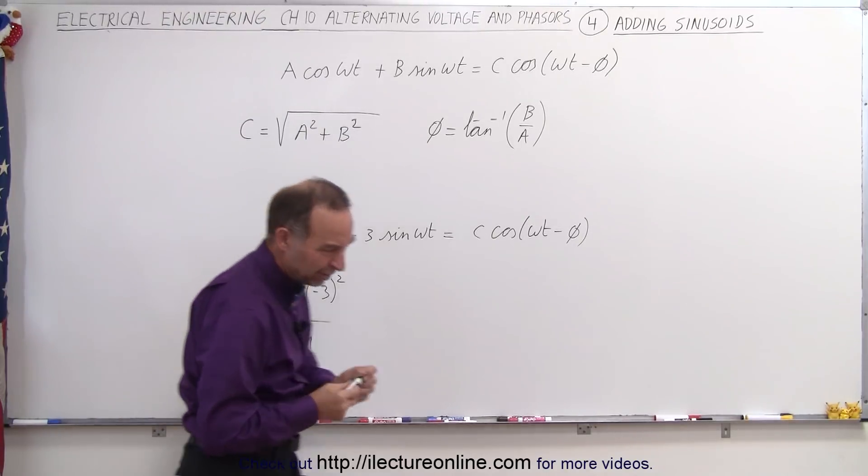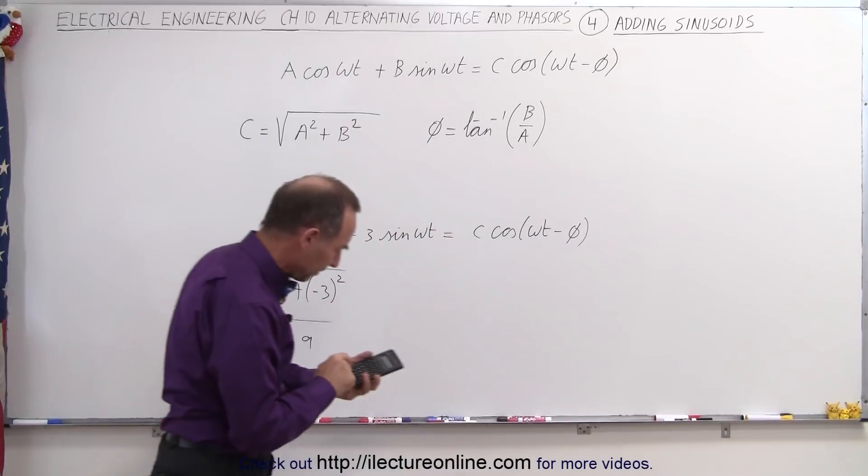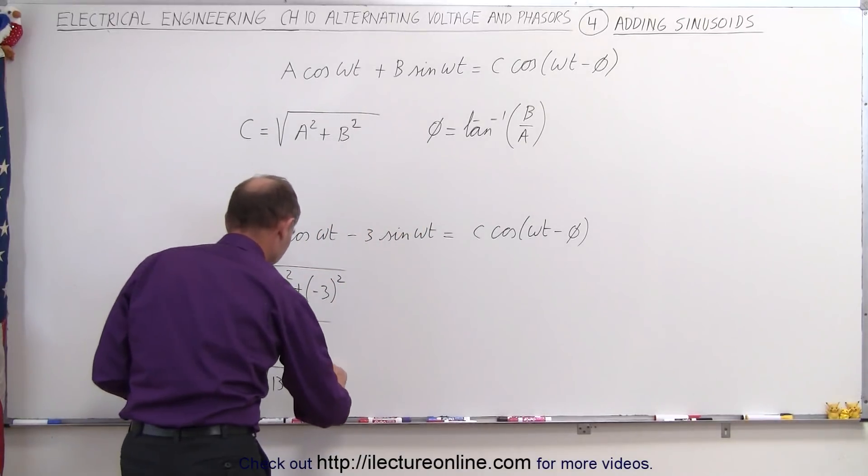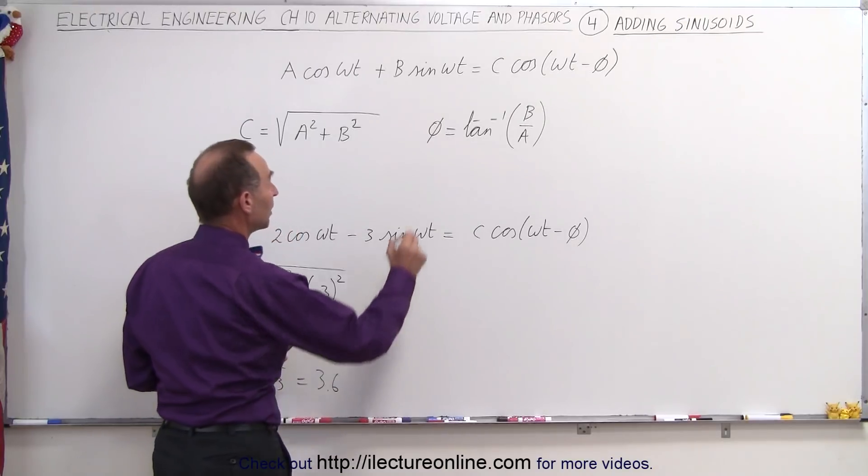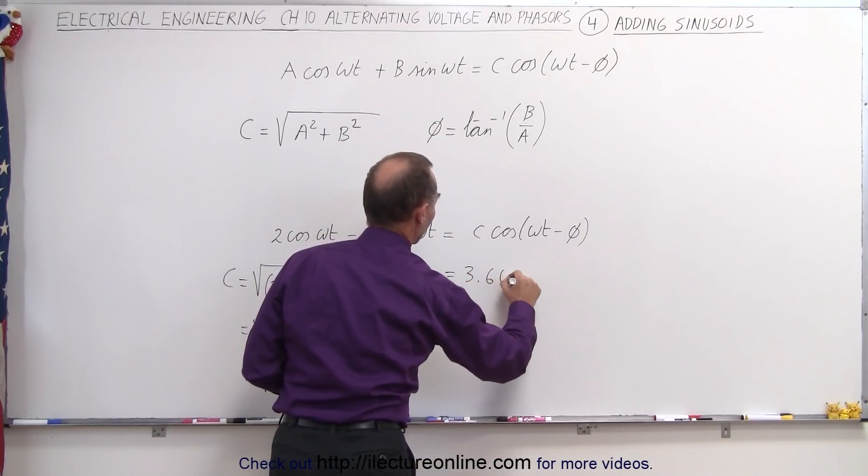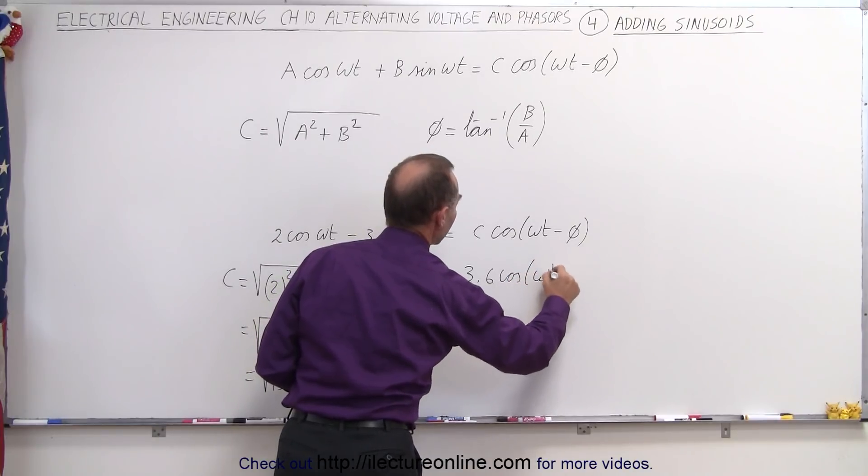And of course, if you want the decimal number for that, the square root of 13 would be 3.6. So this would be equal to 3.6 times the cosine of omega t. Now, the phase angle.